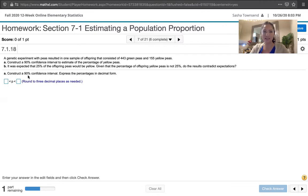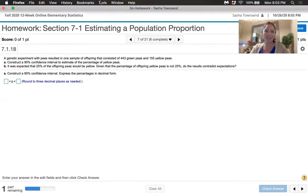So in Part A, it says construct that 90% confidence interval and express the percentages in decimal form. We want them as proportions rather than percentages, and we're asked to round to three decimal places as needed.